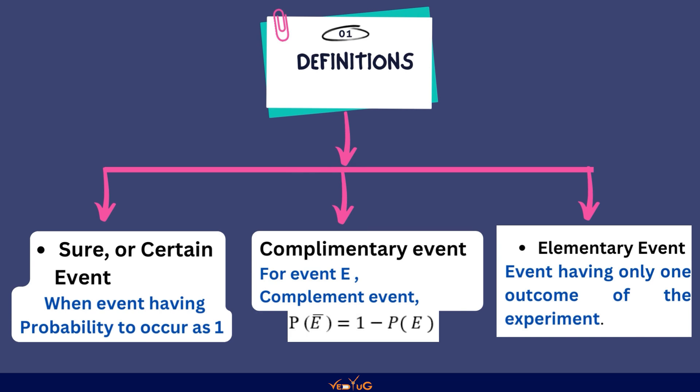Complementary event वो events होते है. For event E, complement of event that is P of E bar equals to 1 minus P of E, यानि के आपको 1 minus probability of event करना है, तो आपको complement of that event मिल जाएगा.